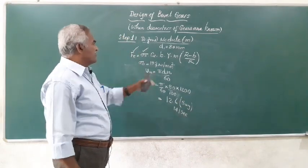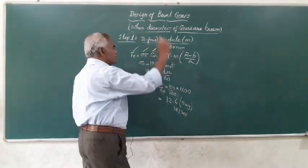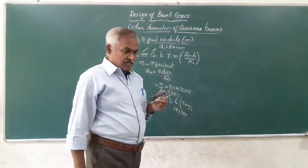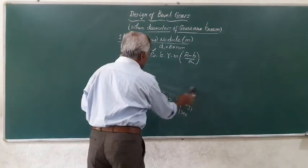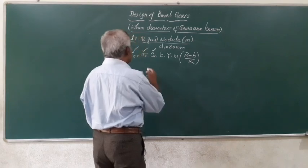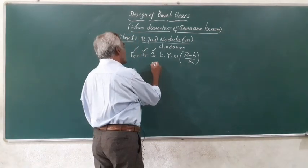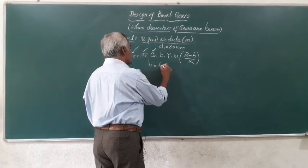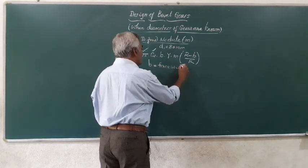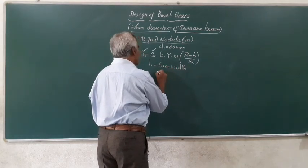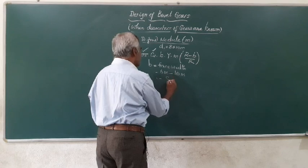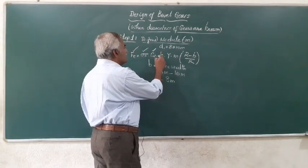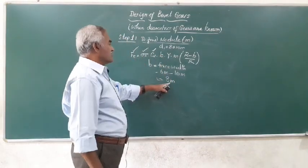Then comes B, the face width of the gear. The face width generally varies from 6 times module to 10 times module, so we take an average of 8 times module and keep it in terms of module since module is still unknown. The term capital Y equals π times small y, where small y is the Lewis form factor — specifically, π times y of pinion since pinion is the weaker member.